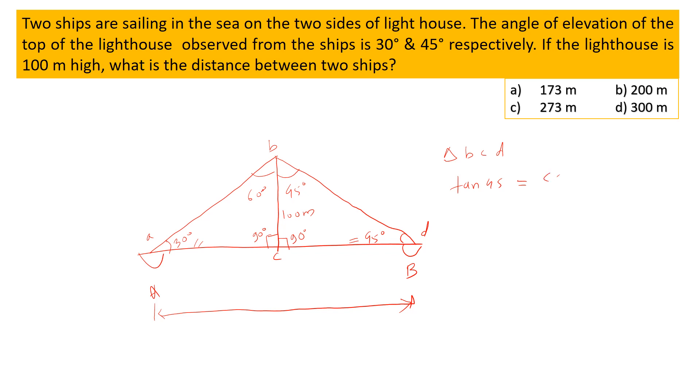Now we know that the value of tan 45° is always 1. So 1 is equal to CD upon BC. What is BC? BC is the height of the lighthouse, that is 100 meters. So we get CD is equal to 100 meters. So we got this distance—this one is 100 meters.